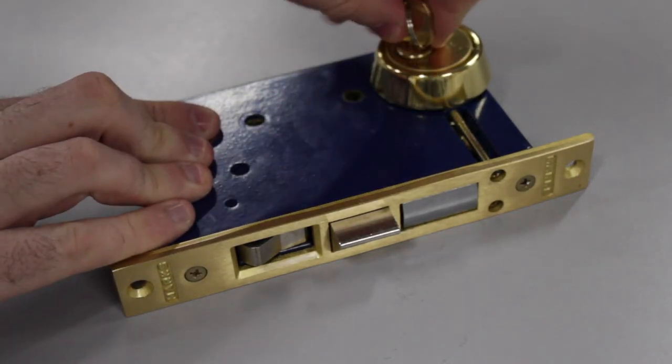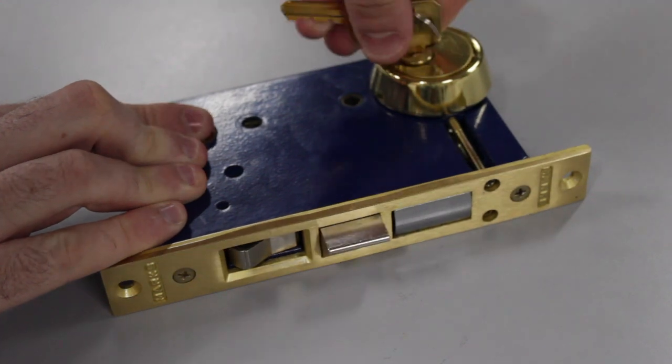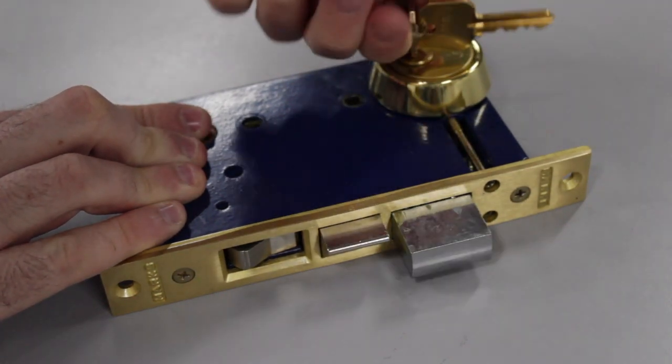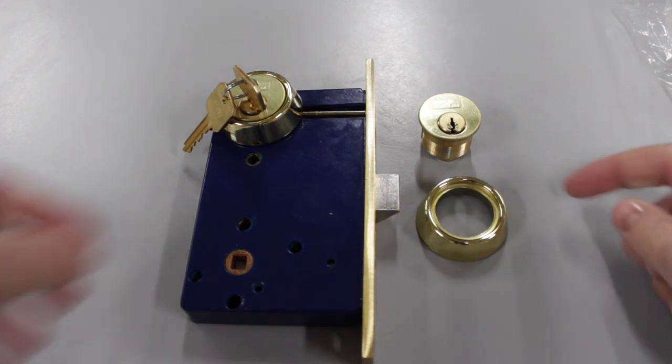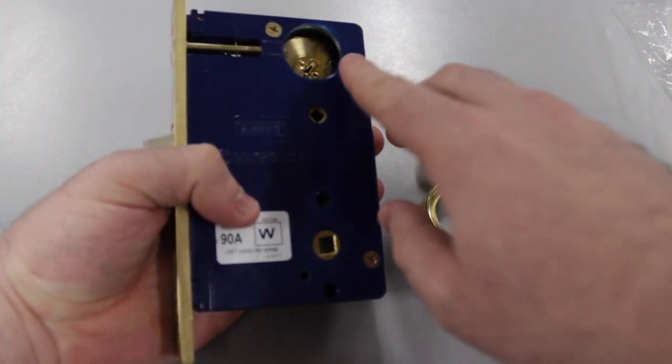Insert the key fully and test to make sure the lock set works properly. Use the other key cylinder and trim ring that is provided to test the other side as well before installation.